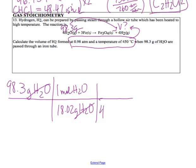The mole ratio is 4 to 4: for every 4 moles of H₂O, I have 4 moles of H₂. We get our moles of H₂ in the calculator. Unlike other problems where you'd go another step, here we stop and use those moles in the ideal gas law. We get 5.46 moles.